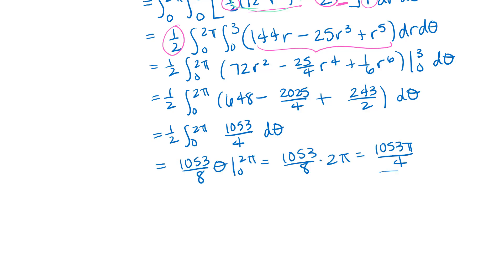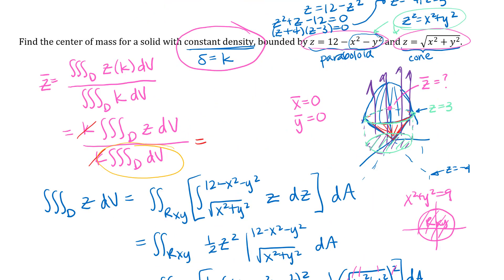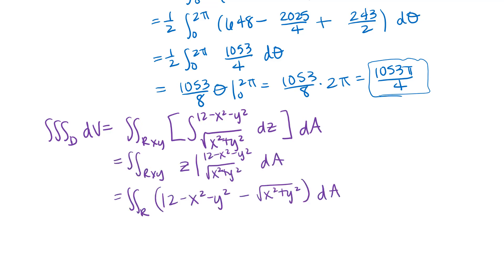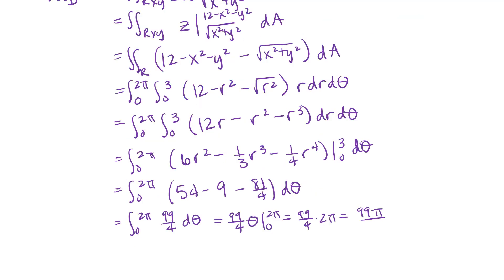The denominator integral is the volume of the region in this case, since the density constants canceled. I set up the integral with dz on the inner integral, integrate with respect to z first, plug in the limits, then convert to polar with the same region and limits as before, and calculate to get the denominator value.